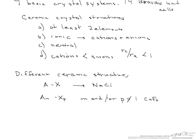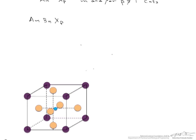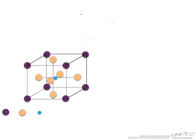We also have a system that is a little bit more complex, AMBXP. Let's show an example of that right here. This is what's known as the perovskite crystal structure. And an example here is barium titanium O3.